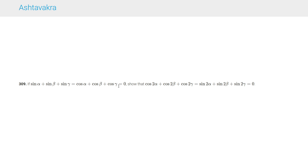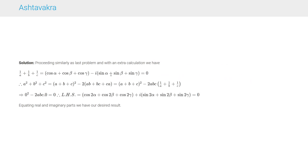Question 309 says: if sin α + sin β + sin γ = 0 and cos α + cos β + cos γ = 0, show that cos 2α + cos 2β + cos 2γ = sin 2α + sin 2β + sin 2γ = 0. From the previous problem we also have 1/a + 1/b + 1/c = cos α + cos β + cos γ - i(sin α + sin β + sin γ) = 0. Now a²+b²+c² = (a+b+c)² - 2abc(1/a+1/b+1/c) = 0 - 0 = 0. So cos 2α + cos 2β + cos 2γ + i(sin 2α + sin 2β + sin 2γ) = 0, giving the desired result by equating real and imaginary parts.